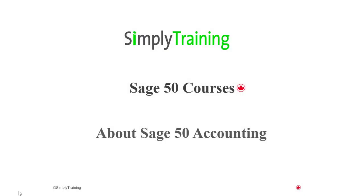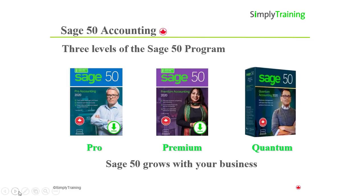Welcome to the video on About Sage 50 Accounting. The Sage 50 program comes in three different levels, and depending on what the accounting needs are determines which program is best for that business. We'll review each of the programs and provide real business examples. This information helps in understanding the Sage 50 programs and their features and to assist in making informed decisions.